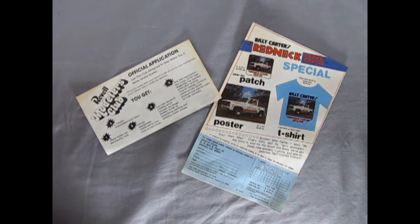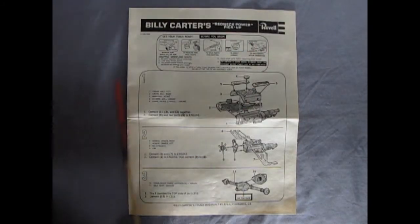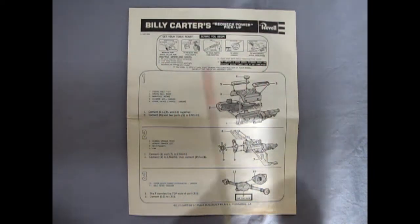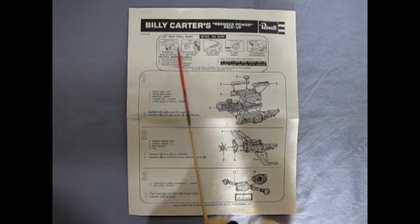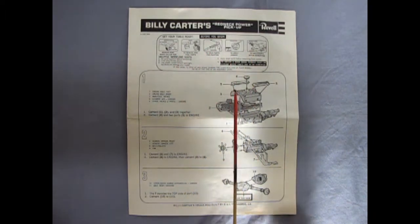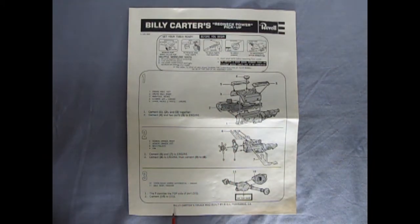So as we look at these instruction sheets, we can see pretty much the typical 1970s Revell paperwork in here, and there it says Billy Carter's Redneck Power pickup. And these are the little pictures of what we need to know before we build our model kit. This is the standard panels we've got which we'll take a look at in a minute. But down here on the bottom it says Billy Carter's truck was built by RVI in Torrance, California.